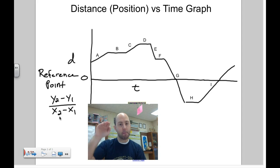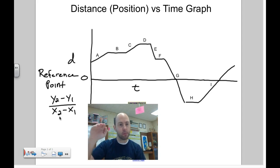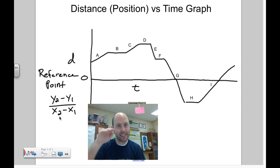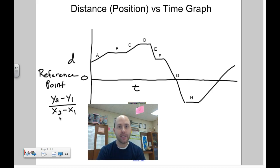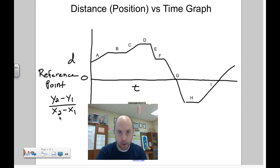Then at B, if I calculate the slope, you'd see that it's zero because my distance is remaining exactly the same. So if my distance is remaining the same, it means I'm not moving — the slope would be zero.